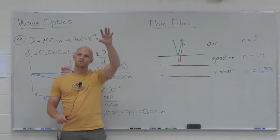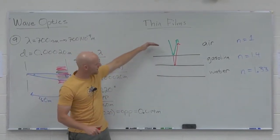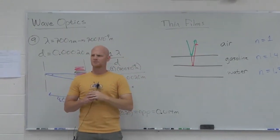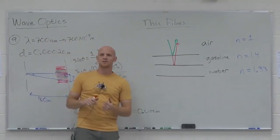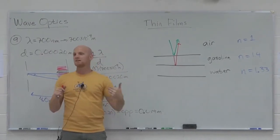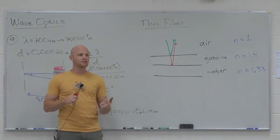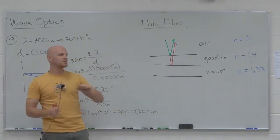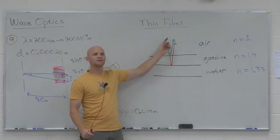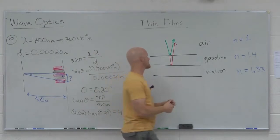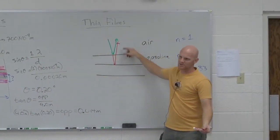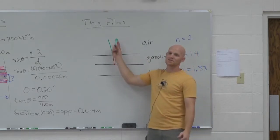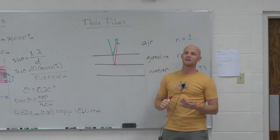As white light hits those bubbles — and white light is all the colored spectrums — some of those colors get eliminated by destructive interference. If you eliminate a color out of white light, you're going to see the complementary color instead. That's why you start seeing colors on the bubbles. The two reflected beams — one from the air-gasoline interface, the other from the gasoline-water interface — have the chance to interfere, and we want to look at the conditions for destructive interference.